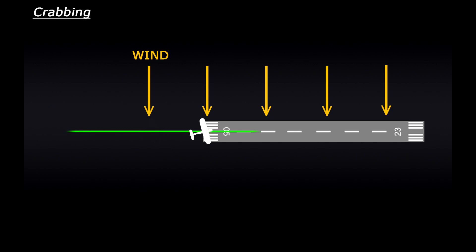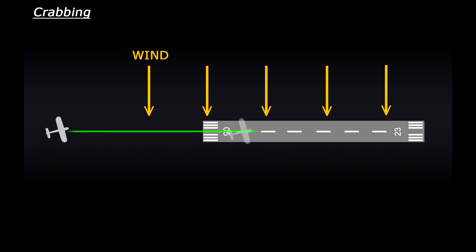The problem is we can't really land like this. If we do, the tyres will hit the runway at an angle and risk getting ripped sideways off the landing gear, which is obviously bad. So just before touchdown, we need to decrab, which involves lining the plane up with the runway so we can land safely.